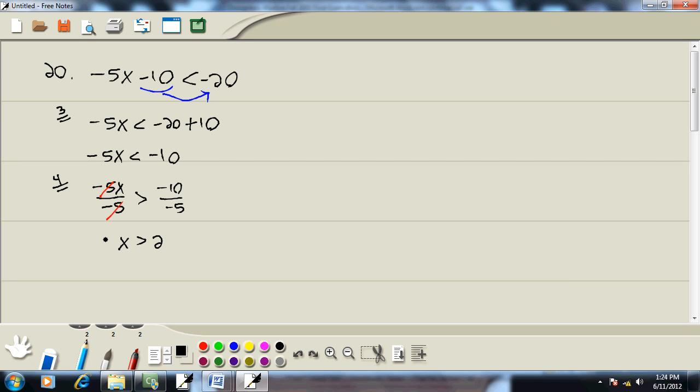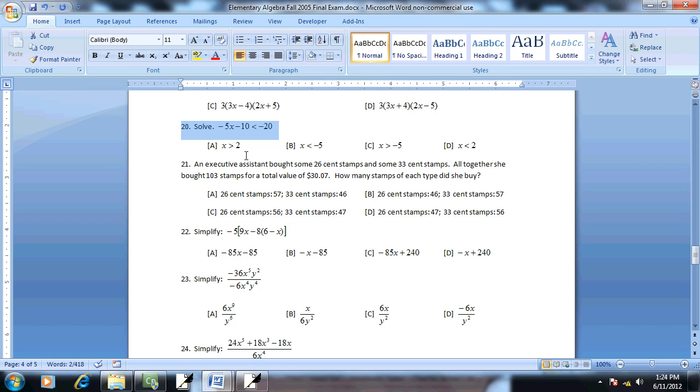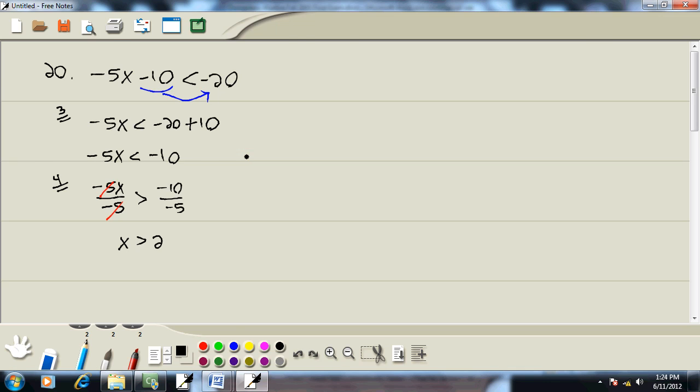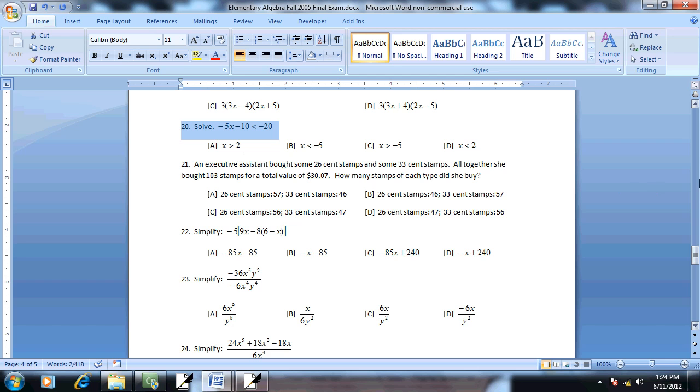Now I don't know what kind of form they have this in. Let's go look. Oh, it's just in that form. Okay, so our answer is x is greater than 2, which is A.